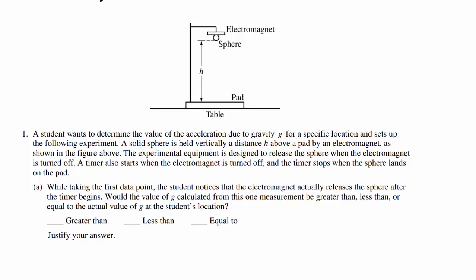A student wants to determine the value of the acceleration due to gravity g for a specific location. They set up an experiment where a solid sphere is held vertically a distance H above a pad by an electromagnet. The equipment releases the sphere when the electromagnet turns off, and a timer measures the time it takes for the sphere to hit the pad.